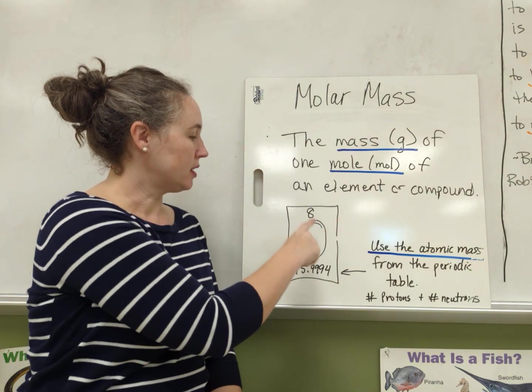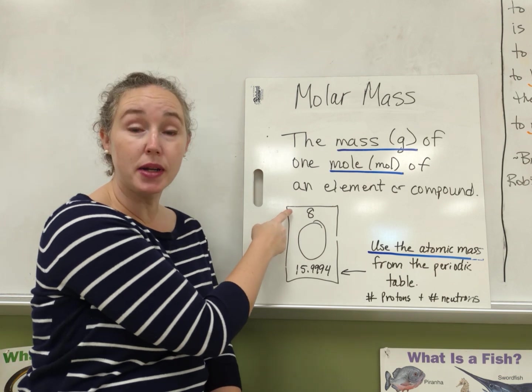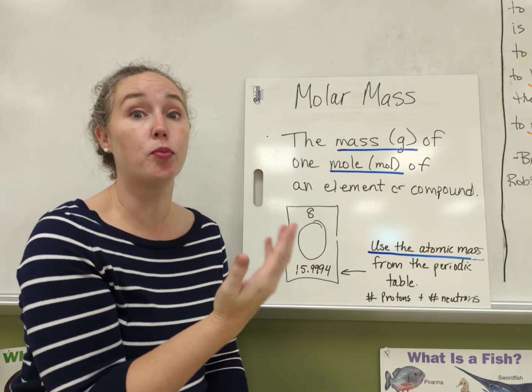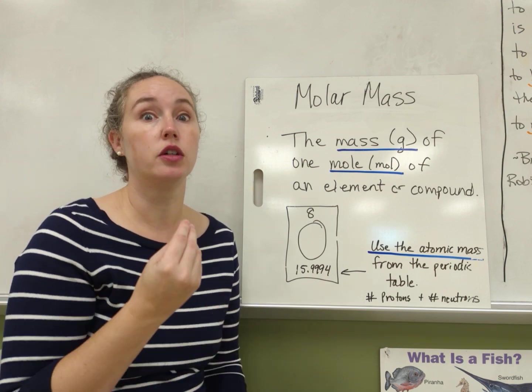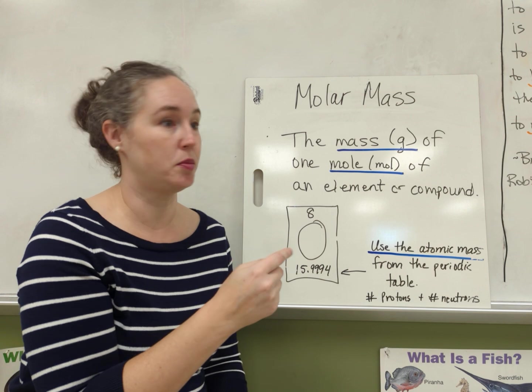In each box at the top is the atomic number. That's just the number of protons. Each has a mass of one amu. The same is true for neutrons. Neutrons also have a mass of one amu.